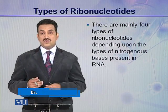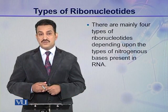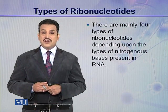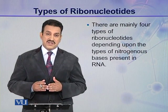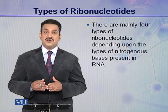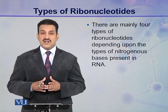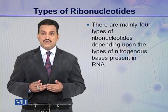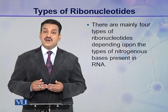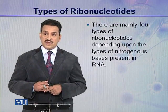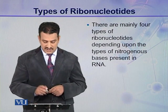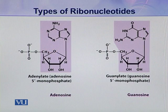There are four types of nitrogenous bases present in a ribonucleotide. One nitrogenous base is present in one ribonucleotide, but overall there are four types of ribonucleotides present in a ribonucleic acid. These four types depend on the type of nitrogenous base.